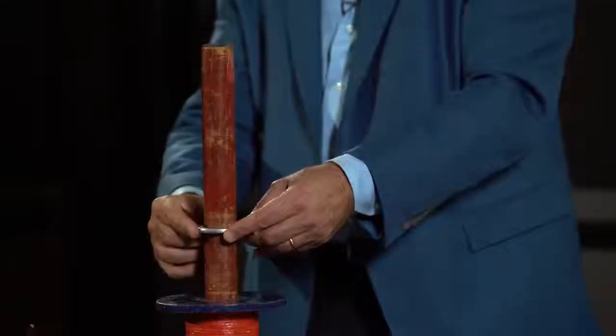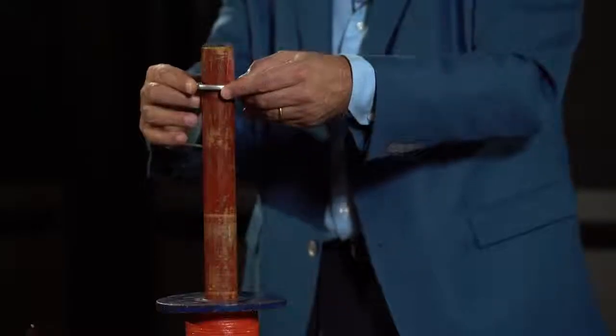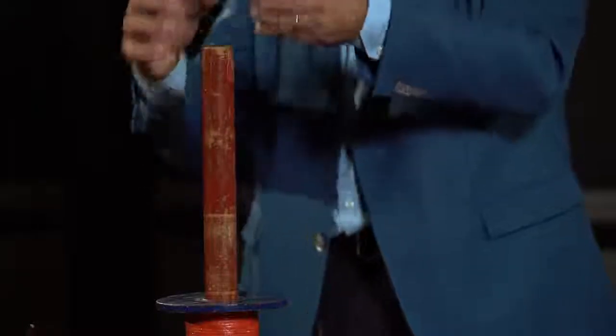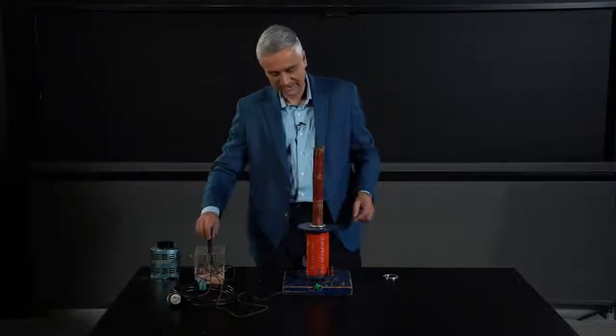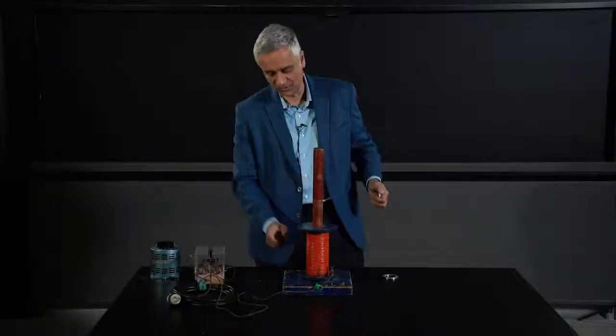What does that mean? It means that the ring tries to get pushed away, trying to reduce the flux through it, and it flies off. So I can make this ring jump by sending a current through this coil down here.